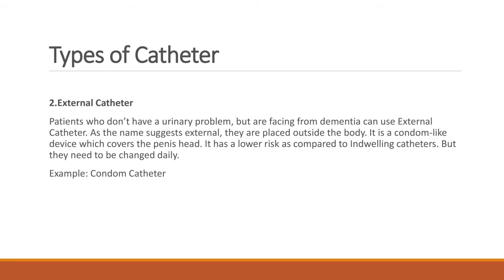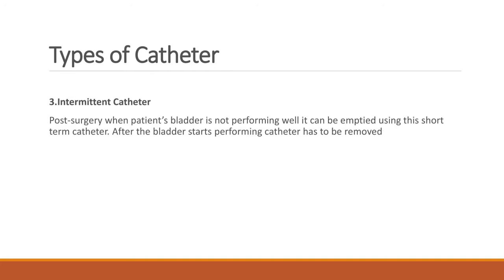Example: Condom catheter. Intermittent catheter: When a patient's bladder is not performing well post-surgery, it can be emptied using this short-term catheter. After the bladder starts performing normally, the catheter has to be removed.